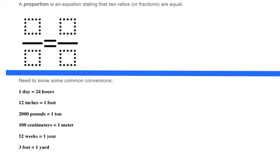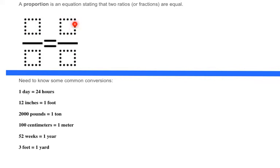First, it's good to know what a proportion is. A proportion is an equation — it has an equal sign stating that two ratios or fractions are equal. When setting these up, you want to keep the same units on top and bottom: if you have feet on the top on the left, you want feet on the top on the right; if you have yards on the bottom on the left, you want yards on the bottom on the right.